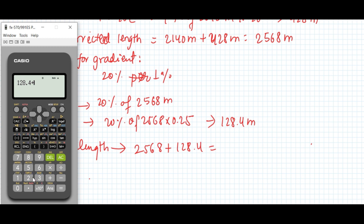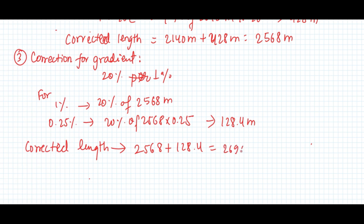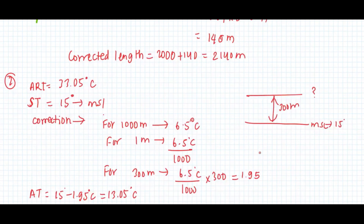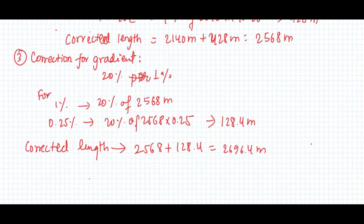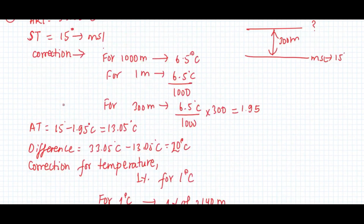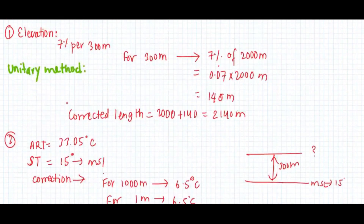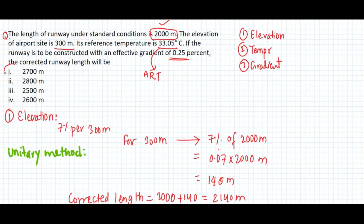So the final corrected runway length is 2,696.4 meters. Looking at the options — 2,700; 2,800; 2,500; 2,600 — our answer of 2,696.4 is nearest to 2,700 meters. So the answer is option A: 2,700 meters. Thank you for watching.